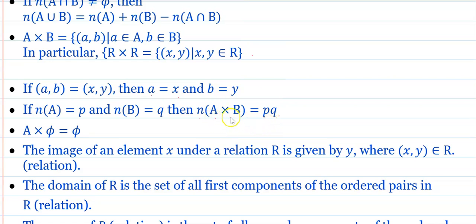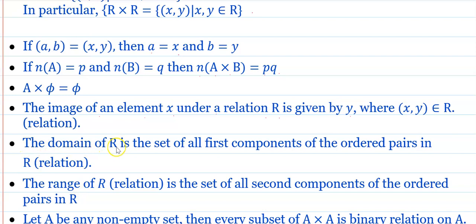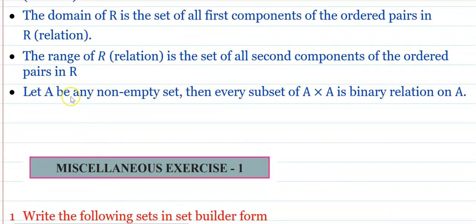These are the number of ordered pairs. A cross phi equals phi. The image of an element x under a relation R is given by y, where x and y belong to the relation R. The domain of R is the set of all first components of the ordered pairs in R. The range of R is the set of all second components. Every subset of A cross A is a binary relation on A.